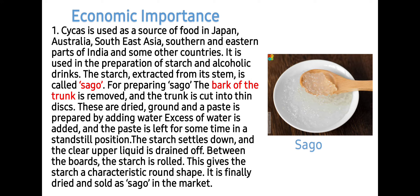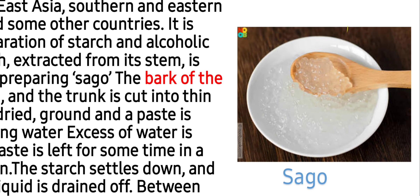For preparing Sago, the bark of the trunk is removed and the trunk is cut into thin discs. These are dried, ground, and a paste is prepared by adding water. Excess water is added and the paste is left for some time in a standstill position. The starch settles down, the upper liquid is drained off, and the starch is rolled between boards. This gives the starch a characteristic round shape; it is finally dried and sold as Sago in the market. Here is kheer made from Sago.